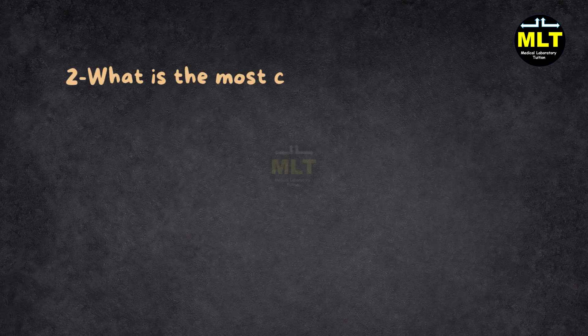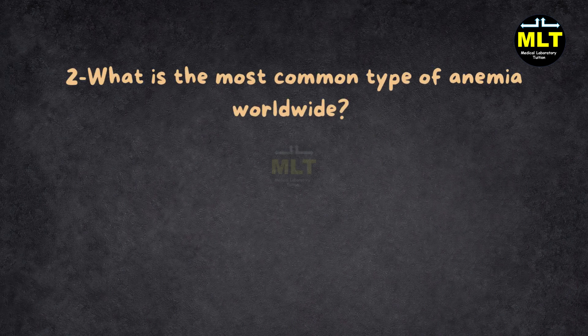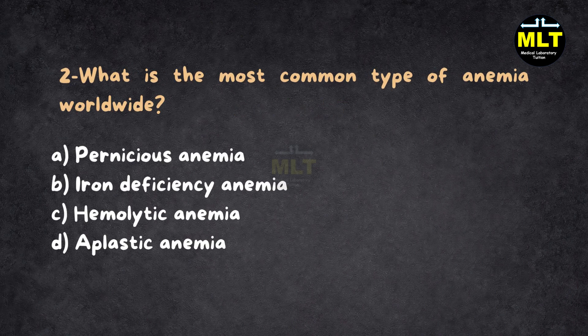MCQ 2. What is the most common type of anemia worldwide? A. Pernicious anemia. B. Iron deficiency anemia. C. Hemolytic anemia. D. Aplastic anemia.